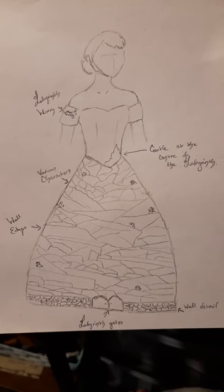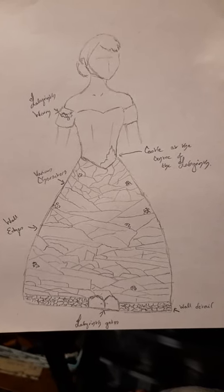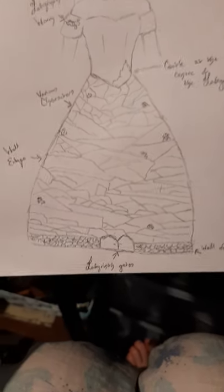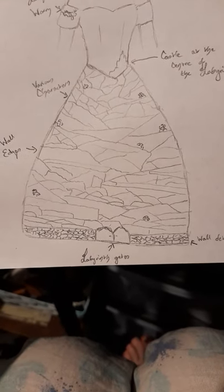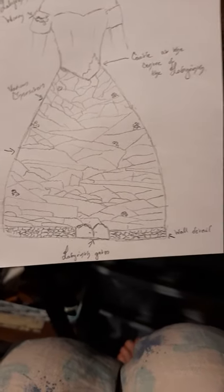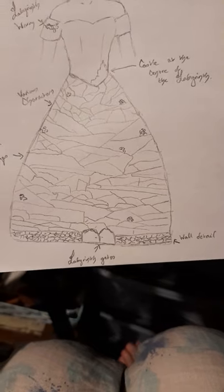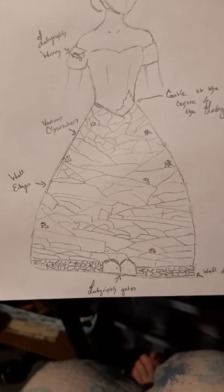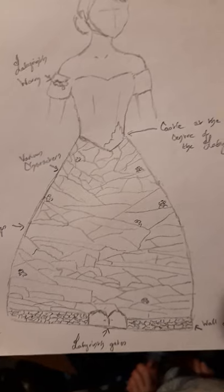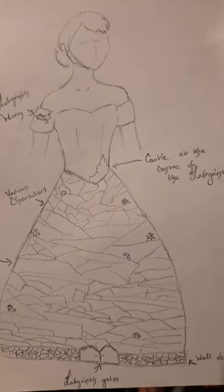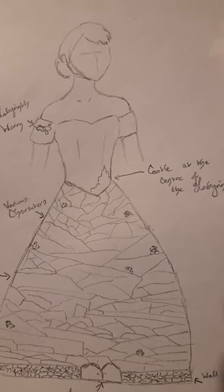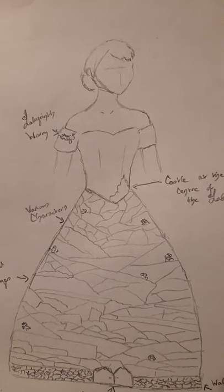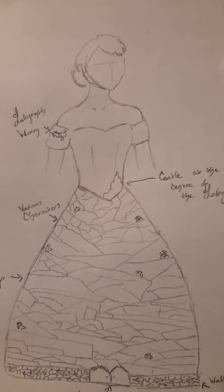So here is the very rough design finished. I'm going to have the labyrinth gates at the bottom of the skirt with a detailed wall, and then wall edges going up getting smaller and smaller to the top of the skirt, and the castle at the centre of the labyrinth is going to be painted onto the bodice.